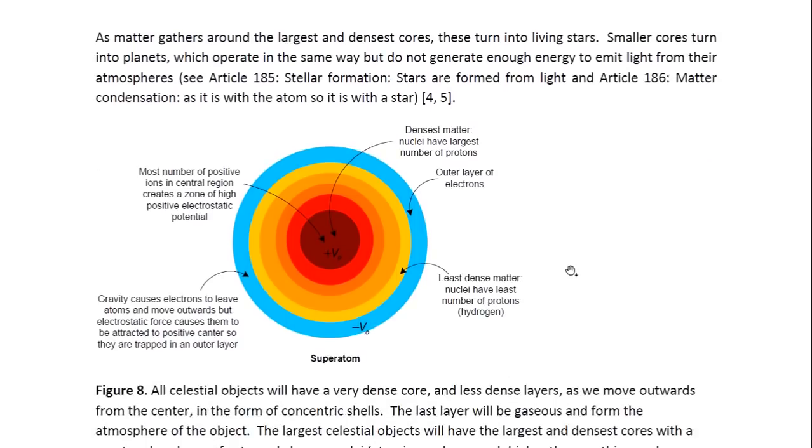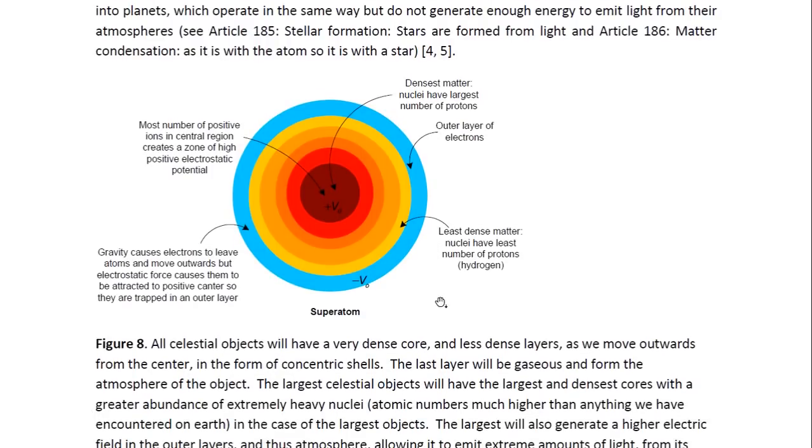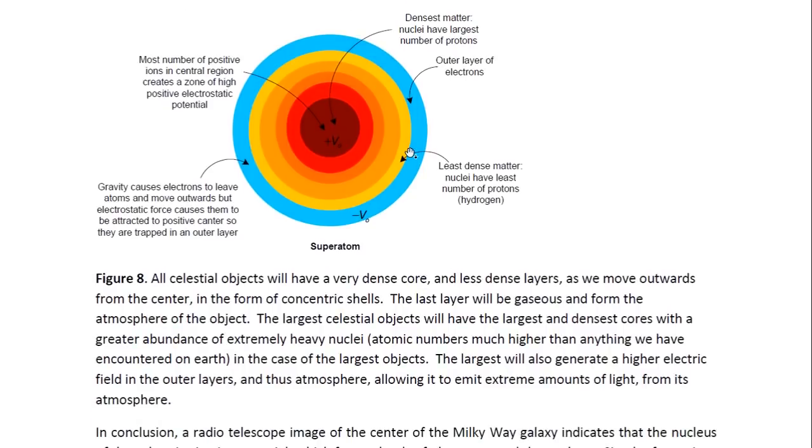As matter gathers around the largest and denser cores, these turn into living stars. Smaller cores turn into planets, which operate in the same way but do not generate enough energy to emit light from their atmospheres. You may look at Article 185 entitled Stellar Formation, Stars are Formed from Light, and Article 186 entitled Metacondensation, As it is with the atom, so it is with a star. This illustrates what a superatom, that is a celestial object, is supposed to be like. It has a very dense core where the heaviest nuclei are abundant and where most radioactive decay is occurring, thus generating the energy which powers the star or the planet.